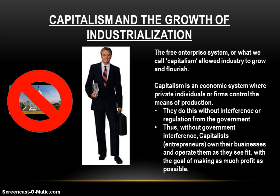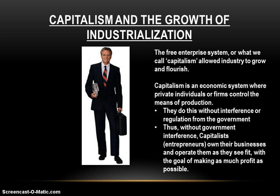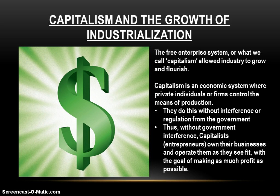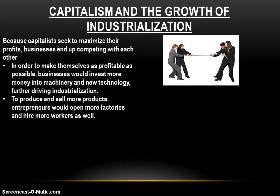The private individuals own and operate their businesses without regulation or interference from the government. Without government interference, capitalists or entrepreneurs — the people who take risks and start businesses — own their own businesses and operate them as they see fit, all with the goal of making as much money as possible. Under capitalism, we look out for our own self-interest, and our self-interest is the profit motive. And because capitalists seek to maximize their profits, businesses ultimately end up competing with one another, investing more money into machinery and new technology, which further drives industrialization.